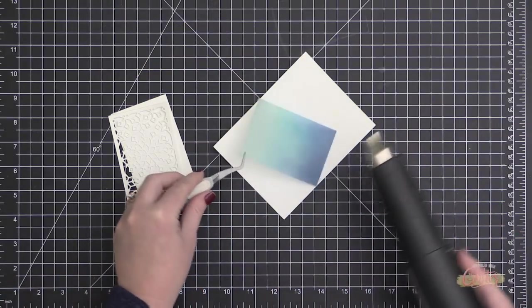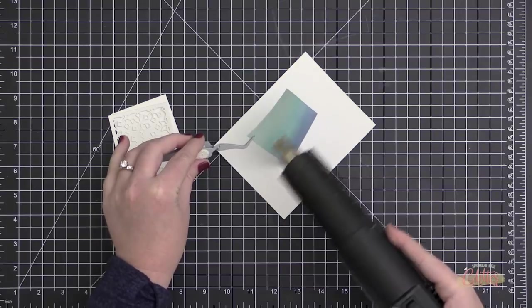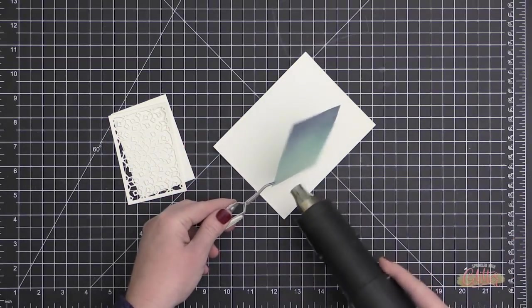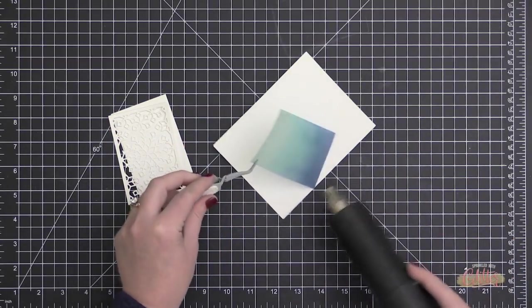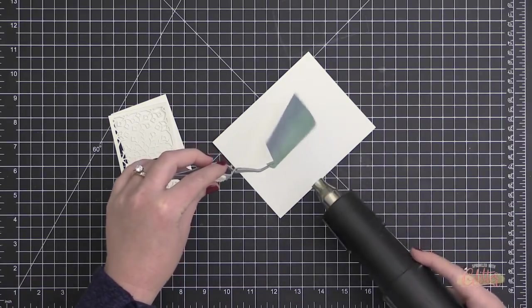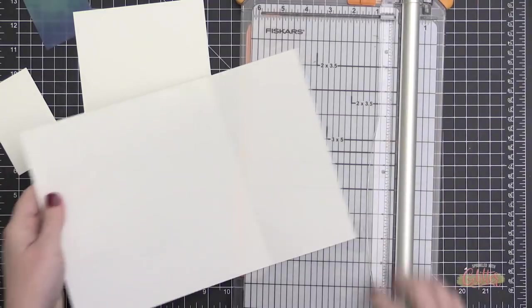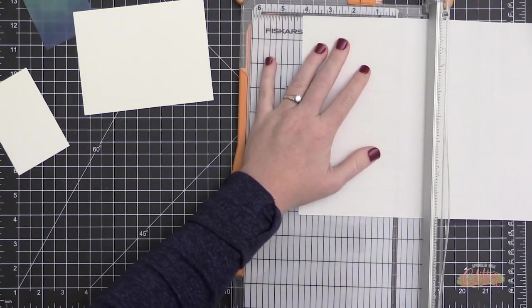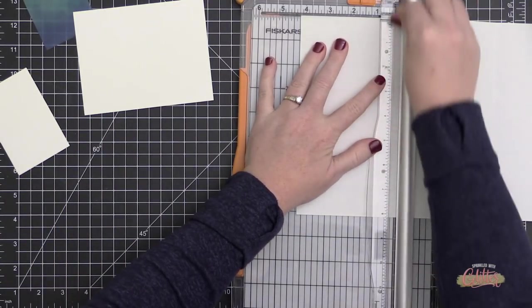I'm going to keep the heat tool moving so that I don't warp my vellum too much, but you've got to get this to dry on that very slick surface of the vellum. So I gave it a good heating with my heat tool and dried it.